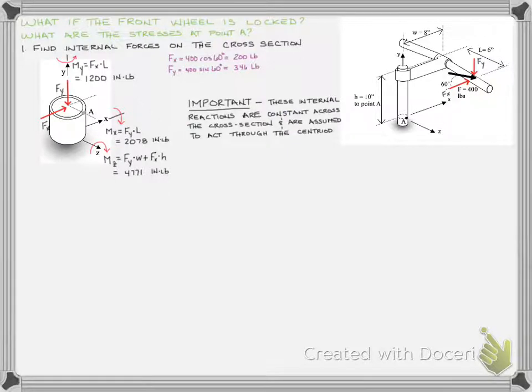Now it's really important that we stress that these internal reactions are constant across the cross section. They are assumed to act to the centroid and they're not just acting at point A, they act on the whole cross section. When we calculate the stresses, the stresses around the cross section whether at the outer fiber at the centroid, the top, the bottom, those could differ based on where we're located. But the entire cross section feels the same internal moments and forces. That's super important.